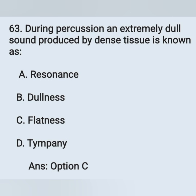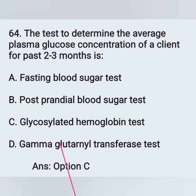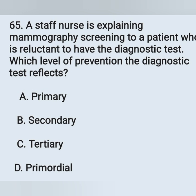Question 64: To determine the average plasma glucose concentration of a client for the past two to three months: Option A: Fasting blood sugar test, Option B: Postprandial blood sugar test, Option C: Glycosylated hemoglobin test, Option D: Gamma glutamyl transferase test. The average plasma glucose concentration over two to three months is determined by the glycosylated hemoglobin test — Option C is the correct answer.